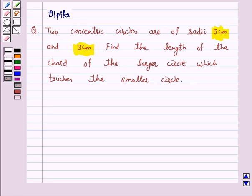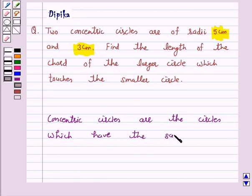Let us first recall the definition of concentric circles. Concentric circles are the circles which have the same center point.